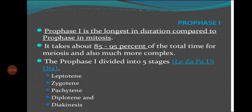Prophase 1 is divided into five sub-stages: leptotene, zygotene, pachytene, diplotene, and diakinesis. The significant features peculiar to meiosis occur in this phase. Students, repeat these words: leptotene, zygotene, pachytene, diplotene, and diakinesis. We are going to study each of these sub-stages in detail one by one.